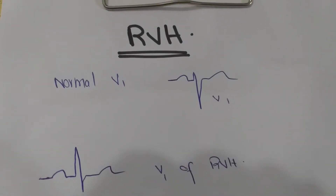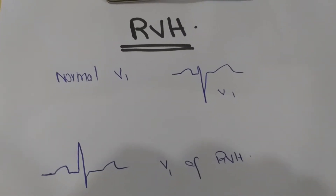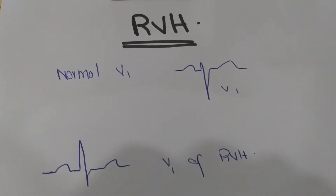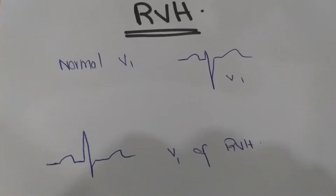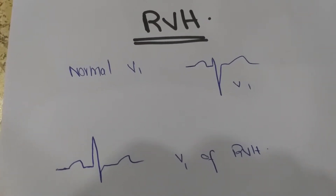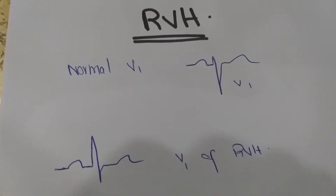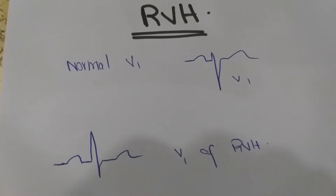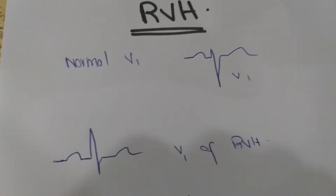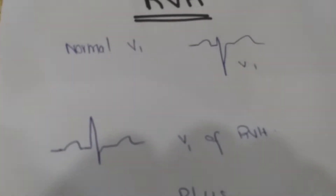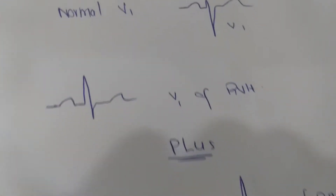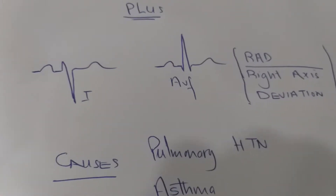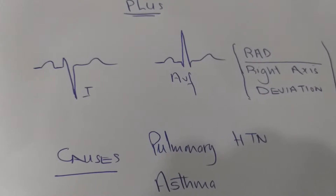We can also calculate right ventricular hypertrophy on the ECG paper. There are two things which must be present: first, normally there is a small R wave and a deep S wave in lead V1, but in cases of right ventricular hypertrophy there should be a tall R wave in lead V1. Second, there should be right axis deviation, where lead I is negative and lead aVF is positive.